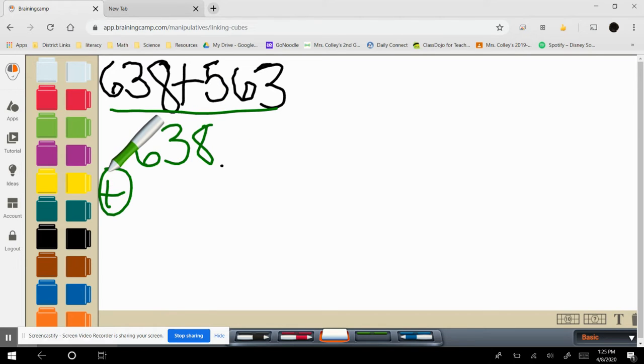638 plus, circle the plus sign so we remember all the operation, 563. Now we have it lined up with our ones, tens, and hundreds.